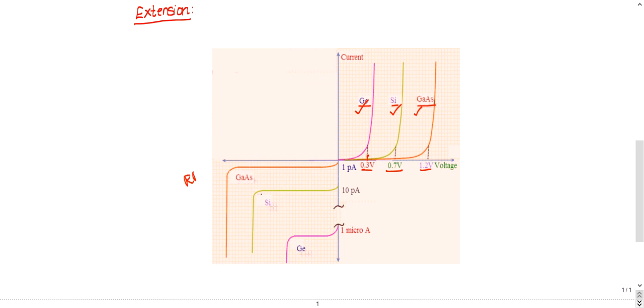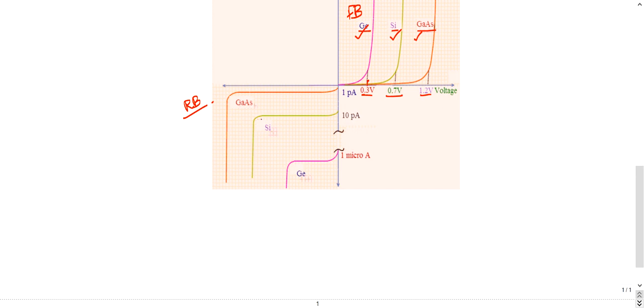Let's see the reverse bias characteristics. These are the forward bias characteristics. During reverse bias, the waveform will look the opposite way. First comes gallium arsenide, then silicon, then germanium. Gallium arsenide will give least current - least current is poor. I don't prefer gallium arsenide because it is giving less current in reverse bias.